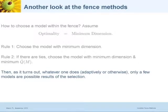So they tie in terms of dimension, both are in the fence, and you pick the model that fits better — that's rule number two. Now, if you follow this rule, it turns out that no matter how you choose the cutoff — you can choose it adaptively, as shown with that little curve, evaluating many different cutoffs — only a few models are possible results of a selection. So looking at all the models, only a few even have a chance to be selected.